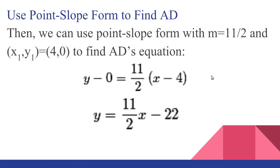And then we find AD. So we use point-slope form with M equals 11 halves. And D is (4,0), so I'm going to use that as X1, Y1. And then we plug into point-slope form: Y minus 0 equals 11 halves, X minus 4. And then to get it into Y-intercept form, like I said at the beginning, we distribute the 11 halves. So we get Y equals 11 halves X minus 22.